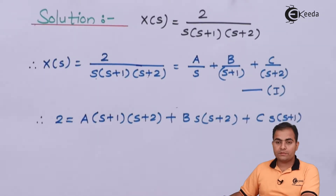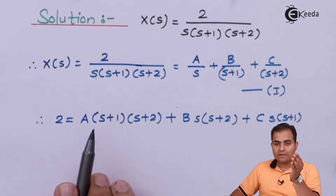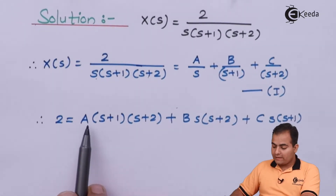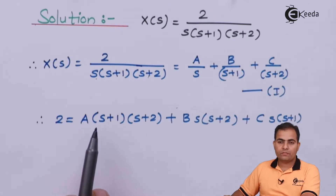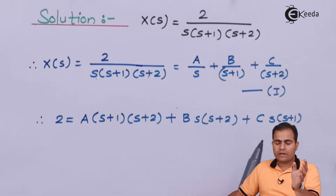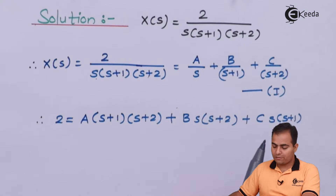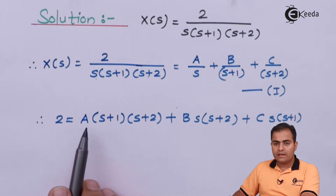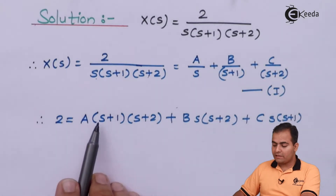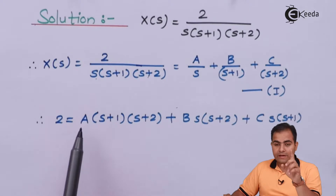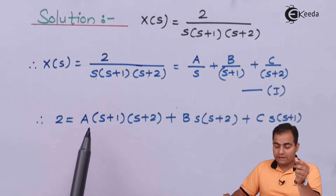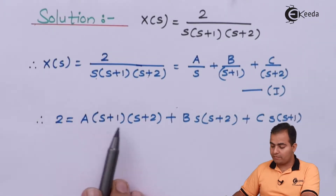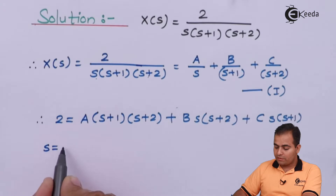We have to substitute the value of S such that we get the values of A, B, C separately. If we want only the A value, we substitute S equal to 0, because here we have S plus 1 and S plus 2. Whenever we want to calculate the value of any variable, always substitute the value of S which is not present in the product term. Here we don't have S term in this product term, so I am going to substitute S equal to 0.